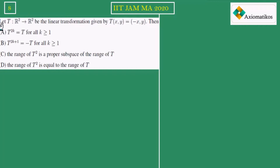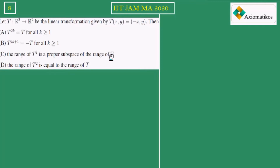It is saying that let T: R² → R² be the linear transformation given by this rule. These are our options. First option says T to the power 2k is equal to T for all k ≥ 1. Second option says T to the power 2k+1. Third option says the range of T² is a proper subspace of range of T, and fourth says range of T² is equal to range of T.